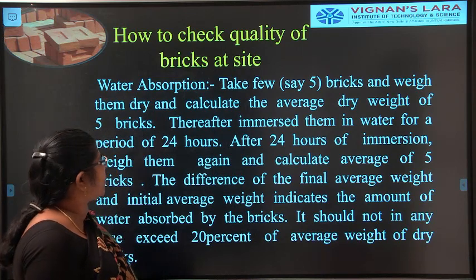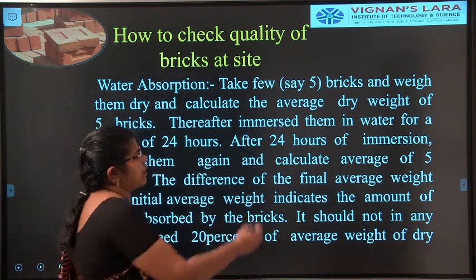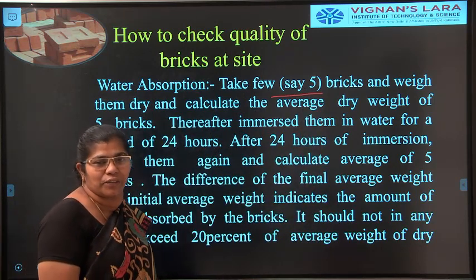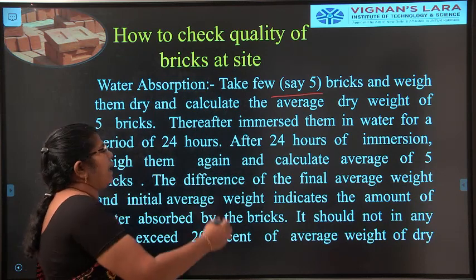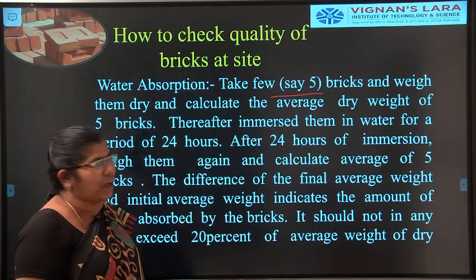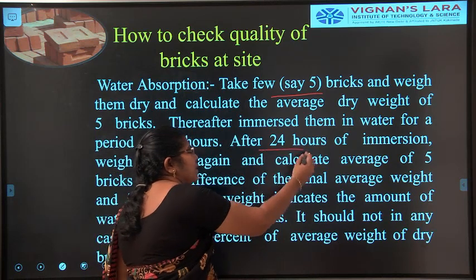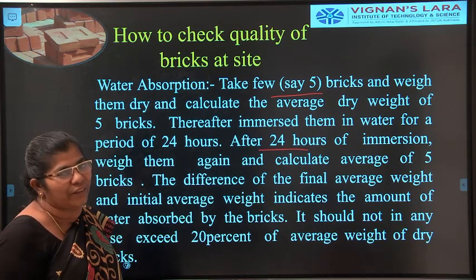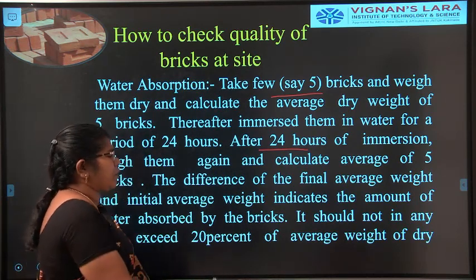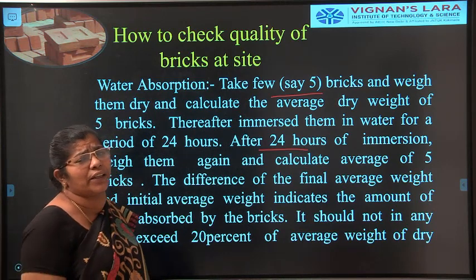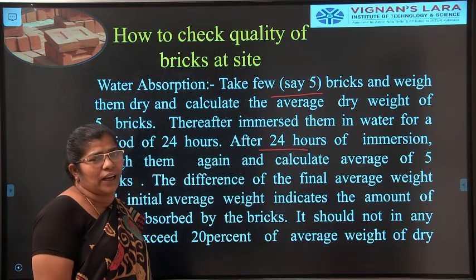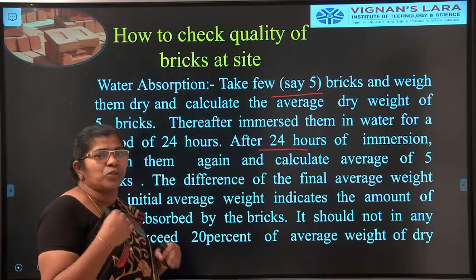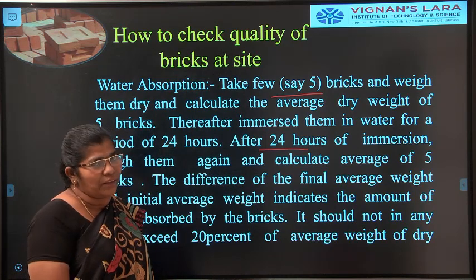For the water absorption test, we take five bricks and record their dry weight. Then we immerse them in water for 24 hours. After 24 hours, we take them out, surface-dry them, and weigh them again. The loss of weight — wet weight minus dry weight divided by wet weight into 100 — gives the water absorption value.